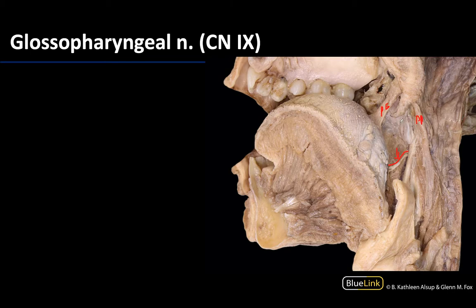This region right here is the tonsillar fossa — you can see a bit of the tonsillar tissue. Any type of surgery that occurs in the tonsillar or palatine tonsillar region really needs to consider this close inferior relationship of the glossopharyngeal nerve.